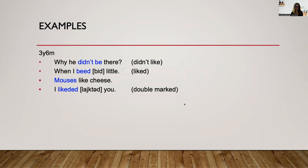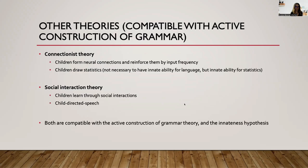Here are some more examples that show active construction of grammar rules being implemented. This is a child at three years six months: 'Why he didn't be here when I bead little?' and 'Mouse is like cheese and I liked it you.' So you can see the application of these rules.